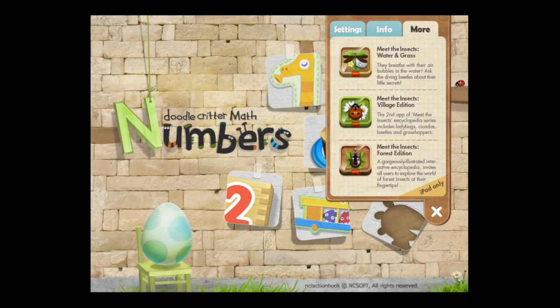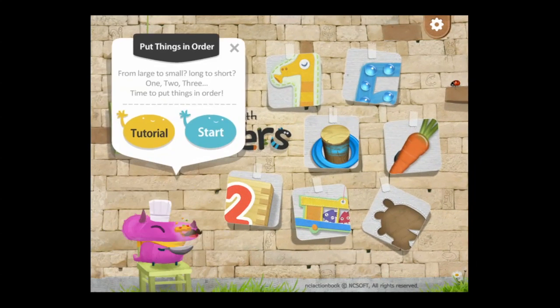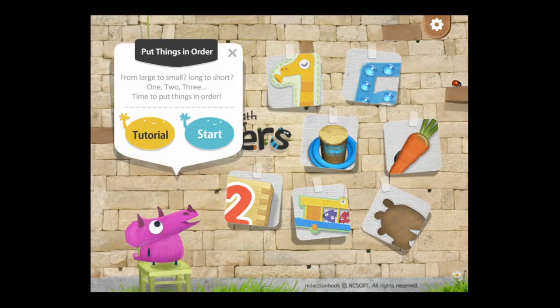Getting into this kid's educational numbers app, let's go ahead and tap on the egg on the bottom left and get a random game. Put things in order.